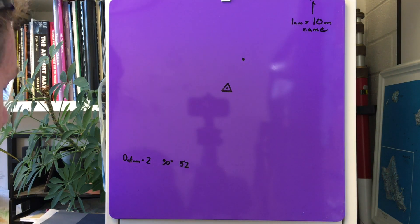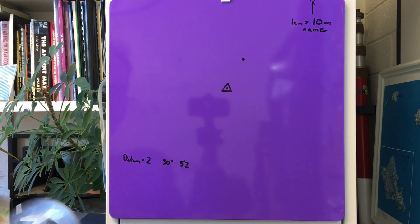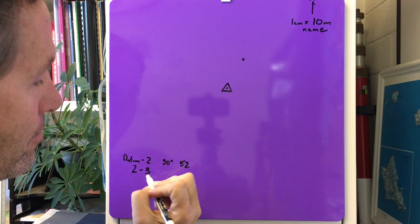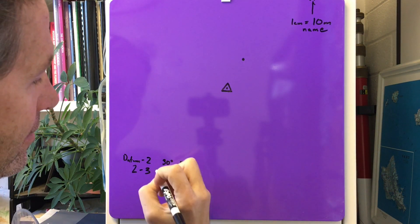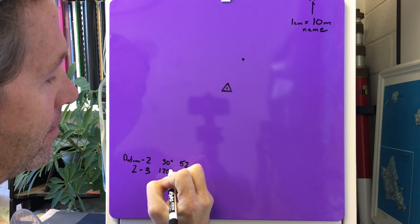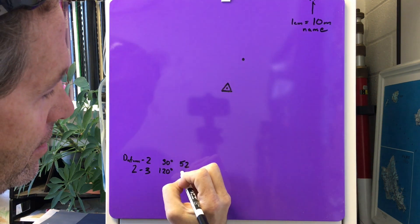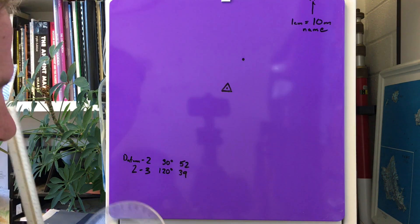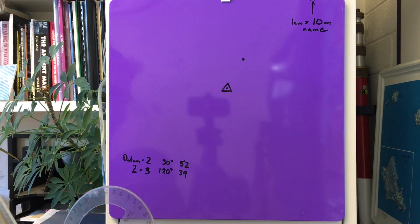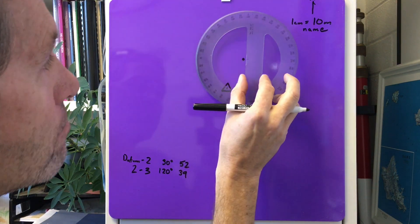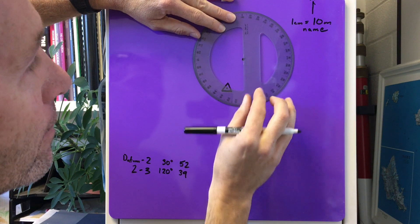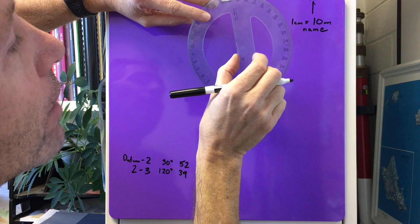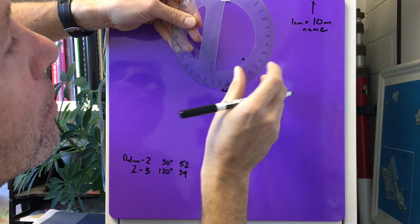Here's the part that everyone screws up on. Point two to point three - let's say that it's 120 degrees and this one is 39 meters. Now a couple things go down that you got to get right. Now you move your protractor to the new point. I'm telling you, that is the number one mess up.